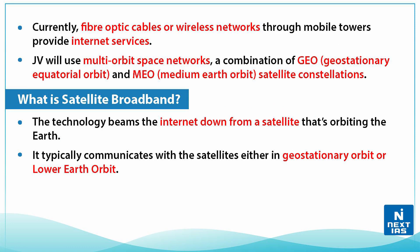Currently, fiber optic cables or wireless networks through mobile towers provide internet services. Jio will use a multi-orbit space network, which is a combination of geostationary equatorial orbit and MEO — medium earth orbit — satellite constellations.